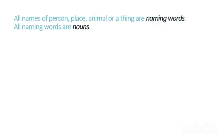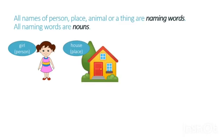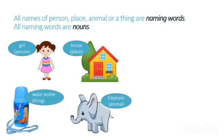But before that, let's revise naming words. All names of a person, place, animal or a thing are naming words, and all naming words are nouns. For example: a girl — name of a person; a house — name of a place; a water bottle — name of a thing; an elephant — name of an animal.